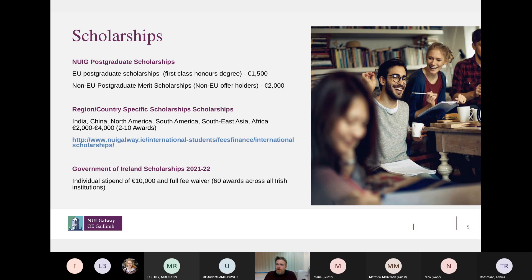There's also a number of regional or country specific scholarships, and I'd encourage you to look at the international students website for those. And lastly, there's a Government of Ireland scholarship, which this year is an individual stipend of €10,000 and a full fee waiver. And there's 60 of those awards being given out this year across all of the different IRIS institutions.